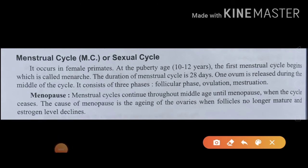Now the next topic is the menstrual cycle. The menstrual cycle is also known as the sexual cycle. It occurs in female primates at the puberty age of 10 to 12 years. The first menstrual cycle begins, which is called the menarche — when the first female period begins, we call it menarche.